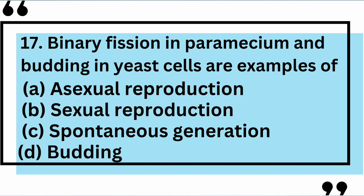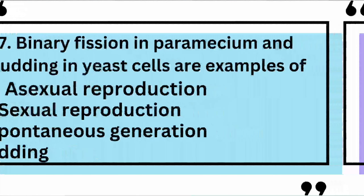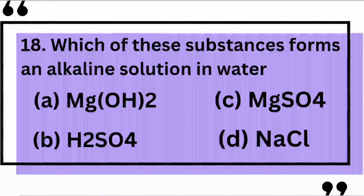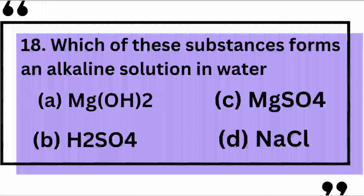Binary fission in Paramecium and budding in yeast cells are examples of — the correct answer is A: asexual reproduction. Which of these substances forms an alkaline solution in water? Yes, the correct answer is A: magnesium hydroxide.